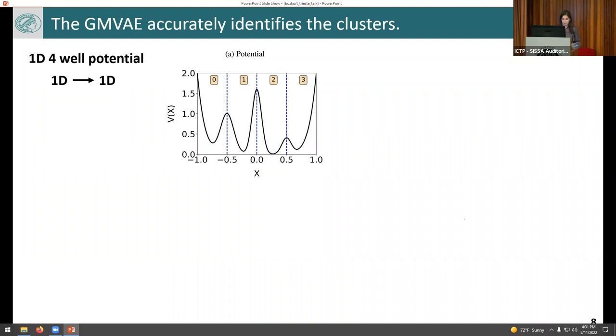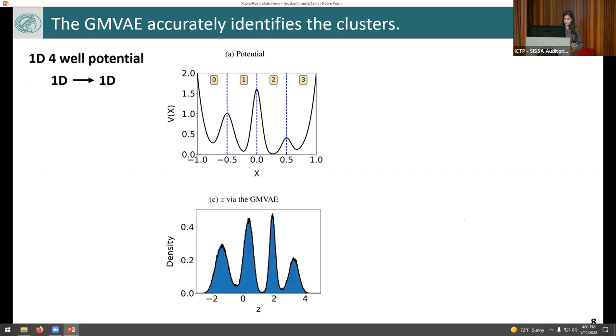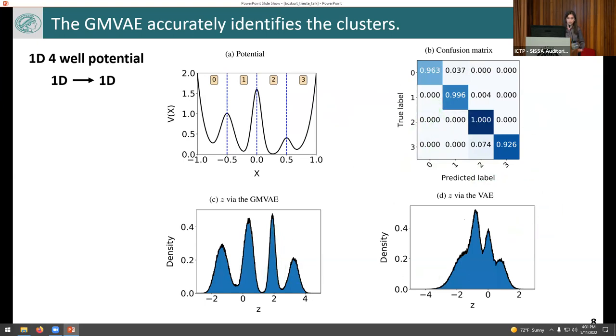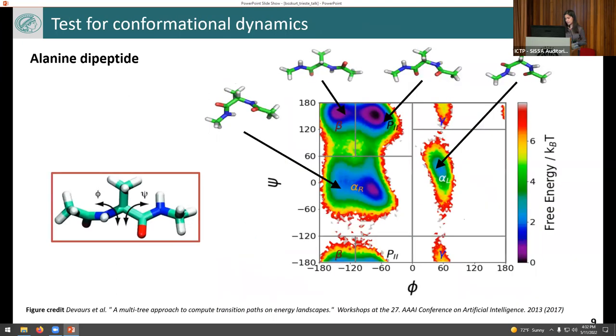Let's start easy and consider the example of 1D potential without any dimensional reduction, concentrating just on the clustering. This is the latent space that we obtained from the Gaussian mixture model, which follows closely to the probability distribution coming from the potential. This is the accuracy matrix that we obtained by taking the cluster IDs from the GMVAE method, which is pretty high. As a comparison, we are also looking at the variational autoencoder case and what it does. As expected, the variational autoencoder pushes things a little bit close to each other and makes clustering difficult. So it seems like a good improvement.